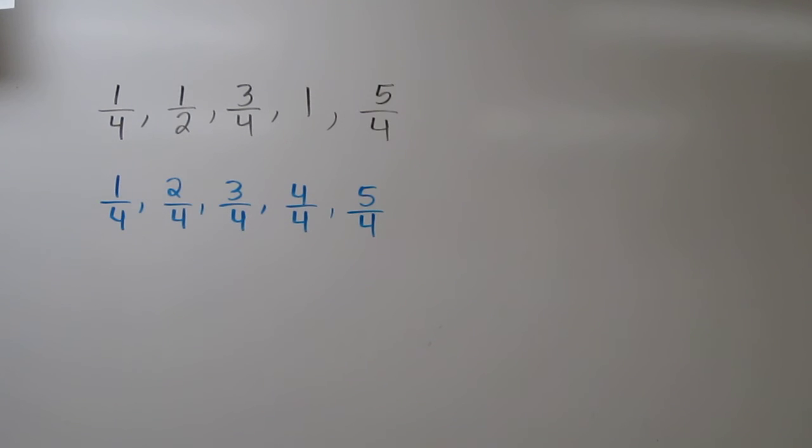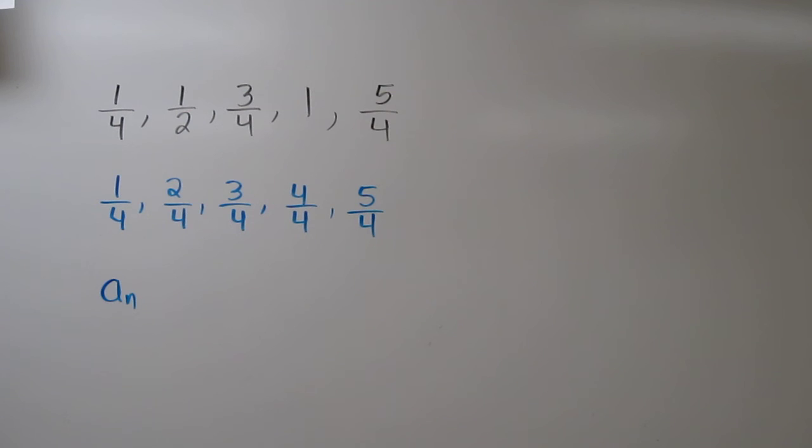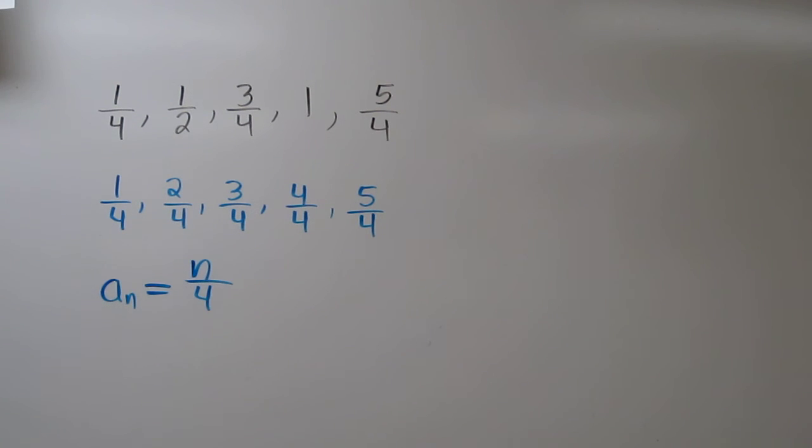Now it's actually pretty easy to see what this rule is. We can find a sub n by plugging in n in the numerator and keeping the denominator as 4.